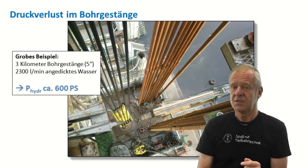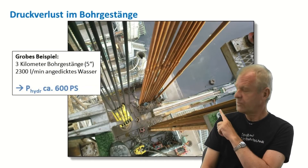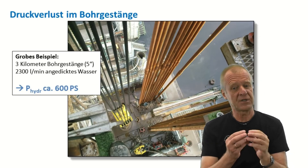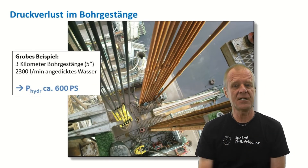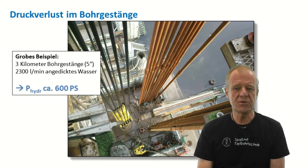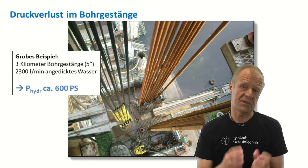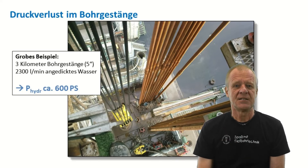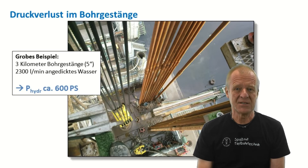Let's look at a quick example. To pump a common flow of 2,300 liters per minute through a 5-inch drill pipe with a total length of 3 kilometers, we will need a mud pump with approximately 600 horsepower.